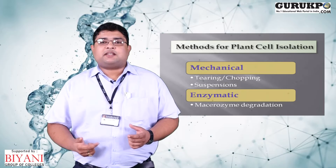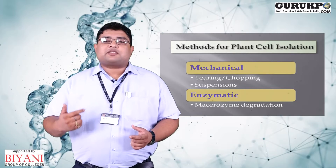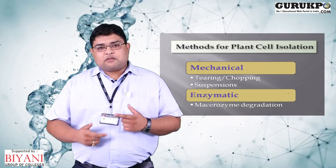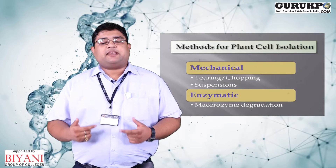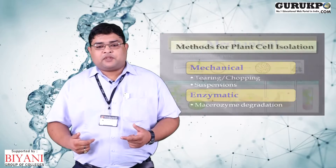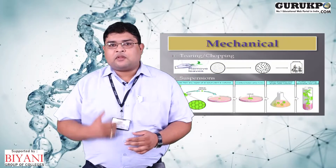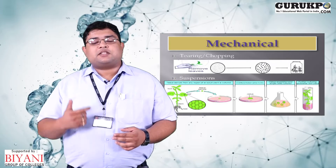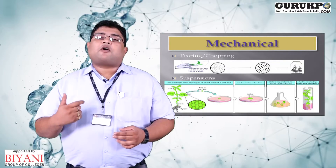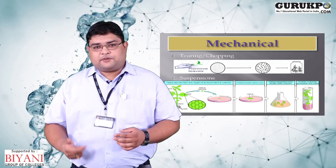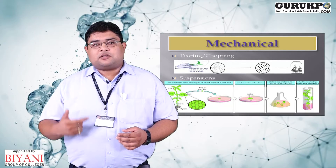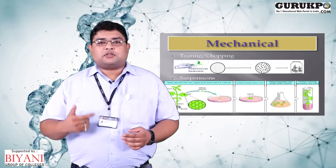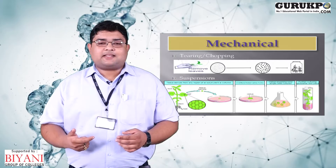The enzymatic method requires enzymes like pectinase, cellulase, or macerozymes so that the cell walls of the plant cells can be dissolved and the cells can be easily separated. The mechanical method involves two steps: first is the chopping or tearing of the explant, and second is the suspension method.